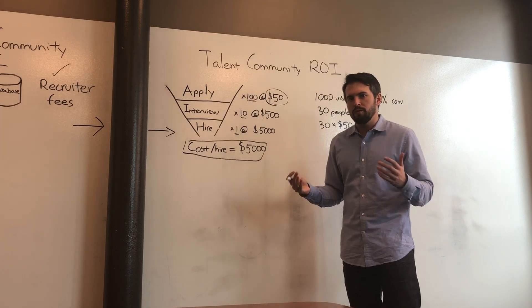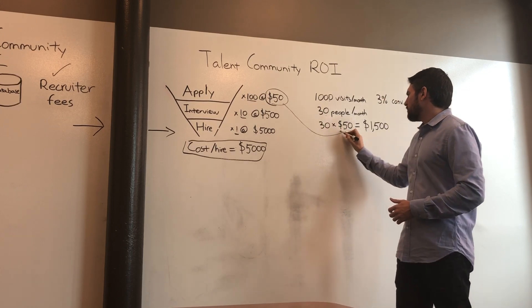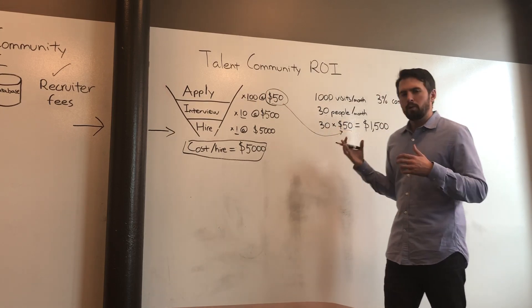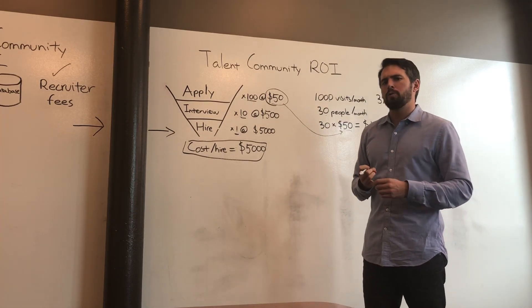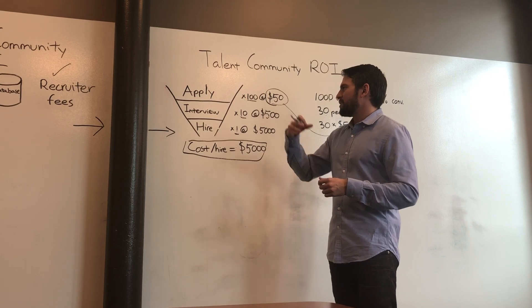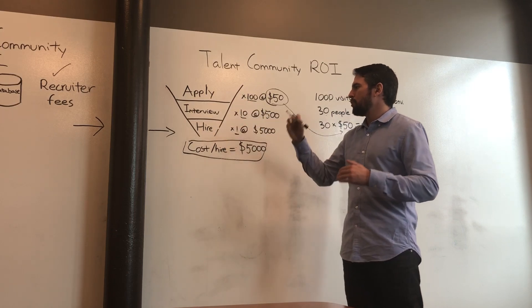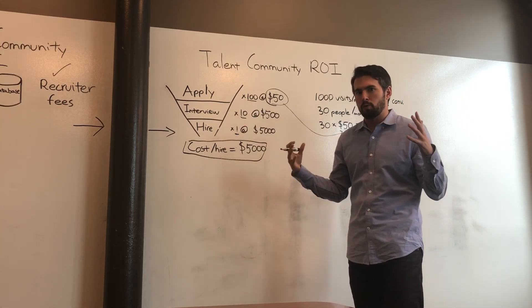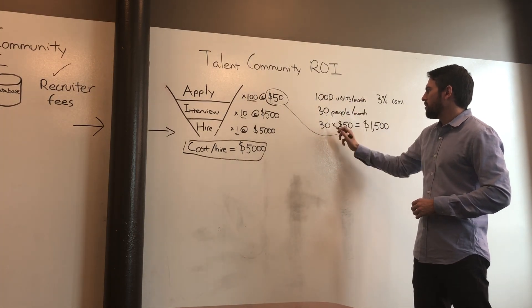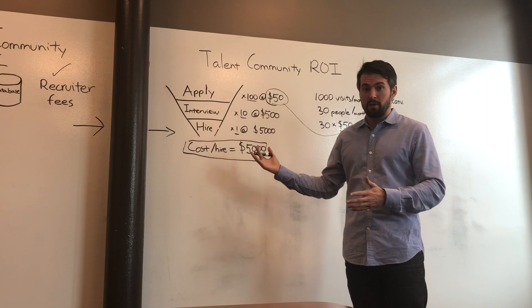So what's the value of those 30 people? We're going to use that $50 number from the application. The cost per application and the cost per talent community member are pretty analogous. The quality is probably higher with the talent community person because they're being more thoughtful about their career. However, it'll take them longer to convert down the funnel since they don't have high intent. So we'll net those two factors out and say they're worth $50. That gives us 30 times $50 — $1,500 per month in value driven through our talent community.